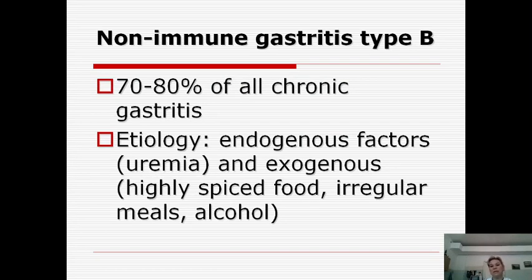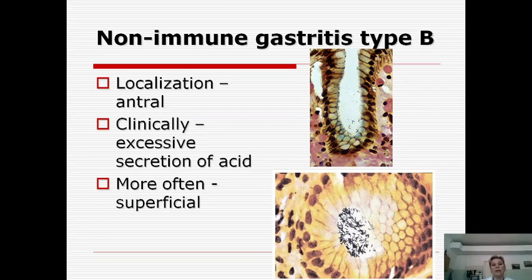Non-immune gastritis type B is the most common type of chronic gastritis, representing 70–80% of all chronic types. Etiology may be endogenous, but more often exogenous factors are responsible, including highly spiced food, irregular meals, and alcohol intoxication. Localization is in the antral part of the stomach; clinically there is excess secretion of acid (hypersecretion). The most common histological finding is the superficial type.